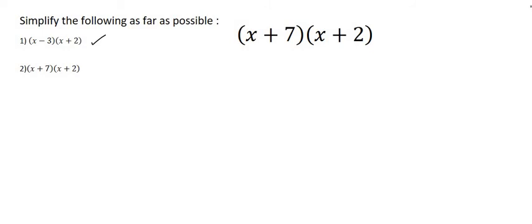Moving on to the next one. We know that this x over here has to be multiplied by this x, and it also has to be multiplied by that 2. So let's start. x times x is x squared. x times by 2 is positive 2x. Now this 7 has to be multiplied by that x, and it has to be multiplied by that 2.